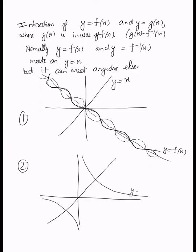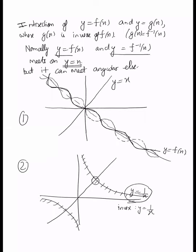The graph is y equal to 1 by x. So when you get the inverse of y equal to 1 by x — what will happen to y equal to 1 by x? This is the whole curve and it has all overlapped. Now you get y equal to x, but it has overlapped with the rest of it. So normally y equal to f(x) and f inverse x meets on y equal to x, but it can meet anywhere else also.